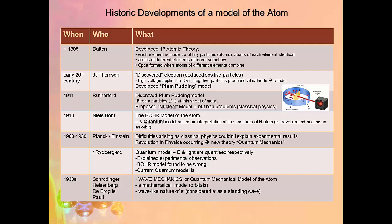From 1900 to 1930, Planck, Einstein, Rydberg, and others developed the quantum mechanical model of the atom as part of a new revolution in physics. In the quantum model, electrons and light are both quantized. The electrons now exist in quantized states where their energy level relative to the nucleus can be explained in quantized terms. This explained experimental observations, and the Bohr model was ultimately found to be wrong.